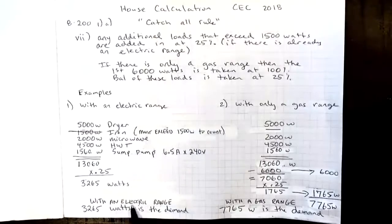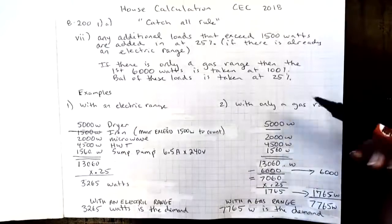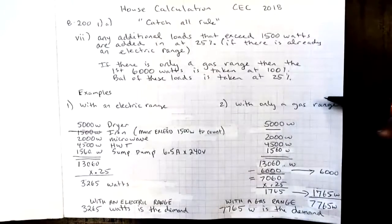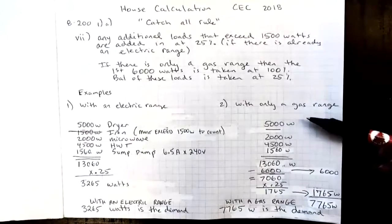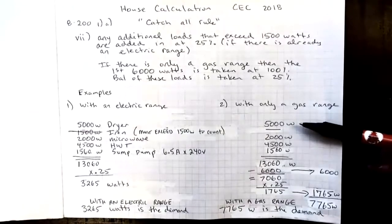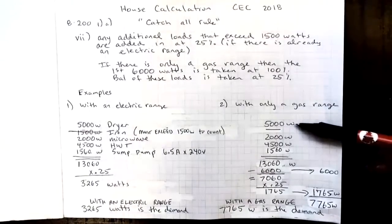That's because we've already accounted for an electric range. On the right hand side, this home only has a gas range. It has the same items that will fall under the catch-all rule, but the calculation is then totally different.